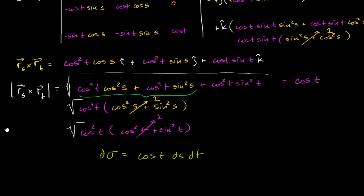Now that we have been able to express our d-sigma, we're pretty close to evaluating the integral itself. One thing I want to point out that might have been nagging you from the end of the last video: at the end of the last video, I took the principal root of cosine squared of t, and I simplified that to just being cosine of t.